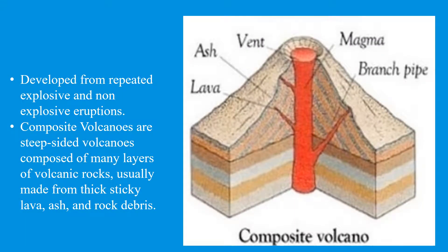A composite volcano is developed from repeated explosive and non-explosive eruptions. They are steep-sided volcanoes composed of many layers of volcanic rocks, usually made from thick sticky lava, ash, and rock debris.